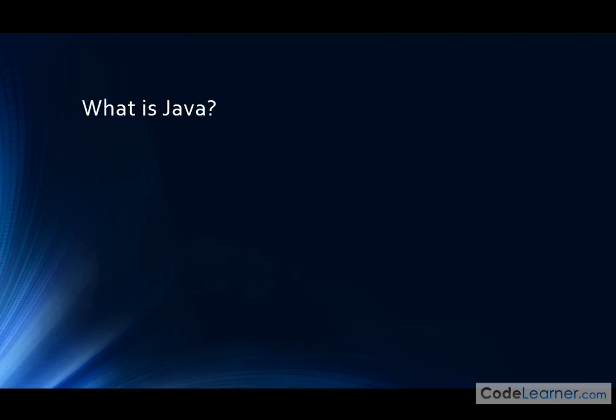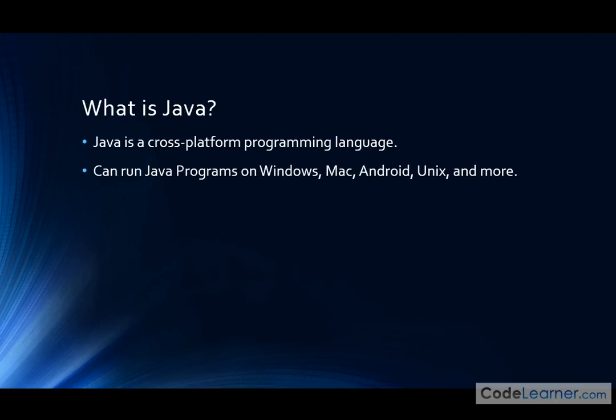The most important thing for you to understand is that Java is a cross-platform programming language. What do we mean by cross-platform? It means you can run your Java programs on all manner of operating systems — Windows, Mac, Android, Unix, and embedded devices inside smaller consumer electronics. It's a programming language you can write and run in a great many different places, and that's why it's really so versatile.